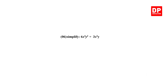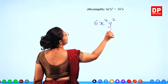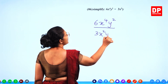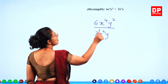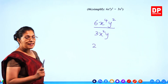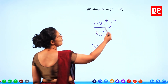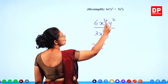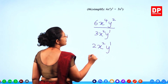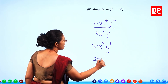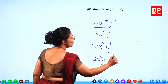Question number 6: simplify. There is division. First term divided by 3x squared y. When dividing, handle numbers separately: 6 divided by 3 is 2. Same base, different powers, division — subtract the powers: x to the power 4 minus 2 gives x squared. For y terms: power 2 minus 1 gives y to the power 1. Final answer: 2x squared y. 2 marks for that question.